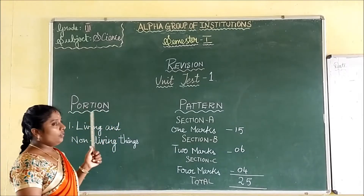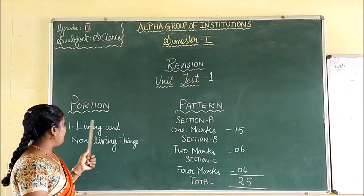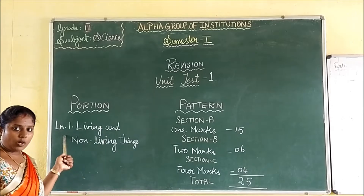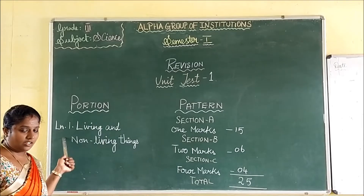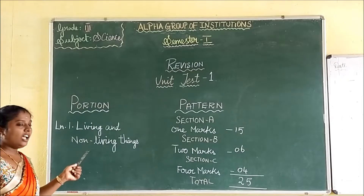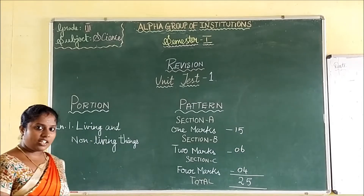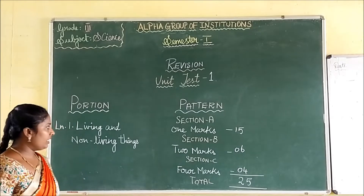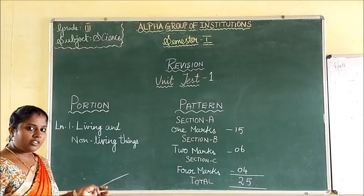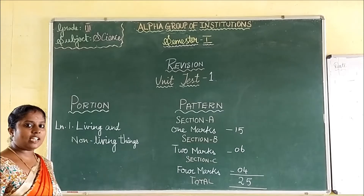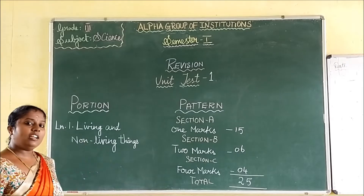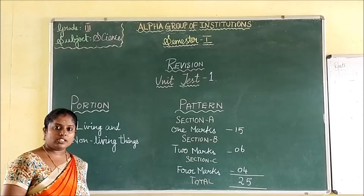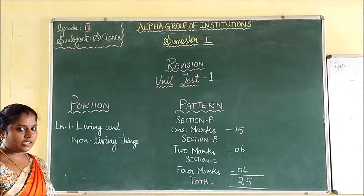We are going to see about our science — what is the pattern for science and what is the lesson portion for this unit test 1 in science. So in our portion for unit 1, we have lesson number 1. Only one lesson: Living and Non-Living Things. It is our first lesson. You all have learned about it earlier itself.